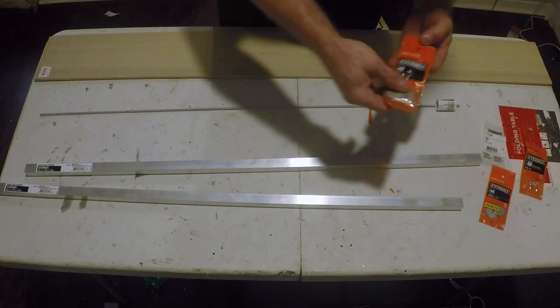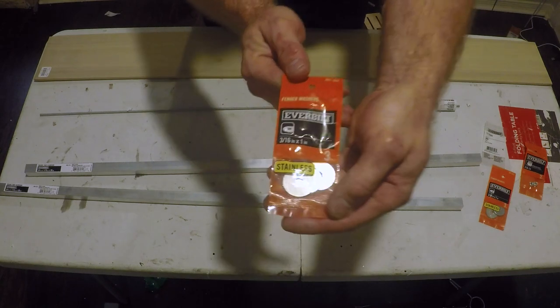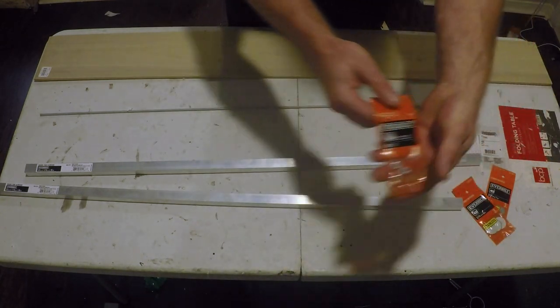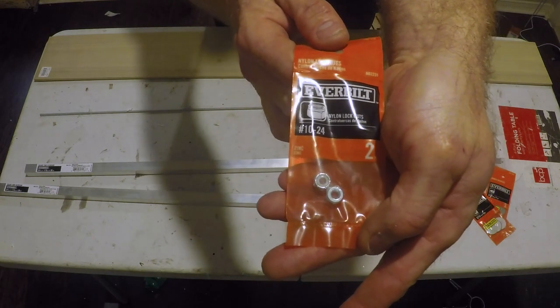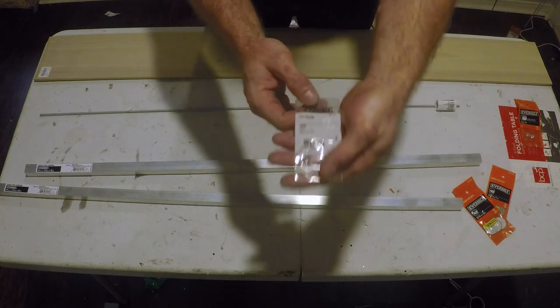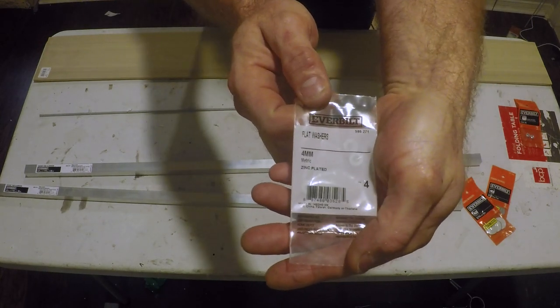You're going to need 4 3/16 by 1 washer, 10 by 24 nylon lock nuts, and if you direct mount your motors, you're going to need some 4 millimeter flat washers.